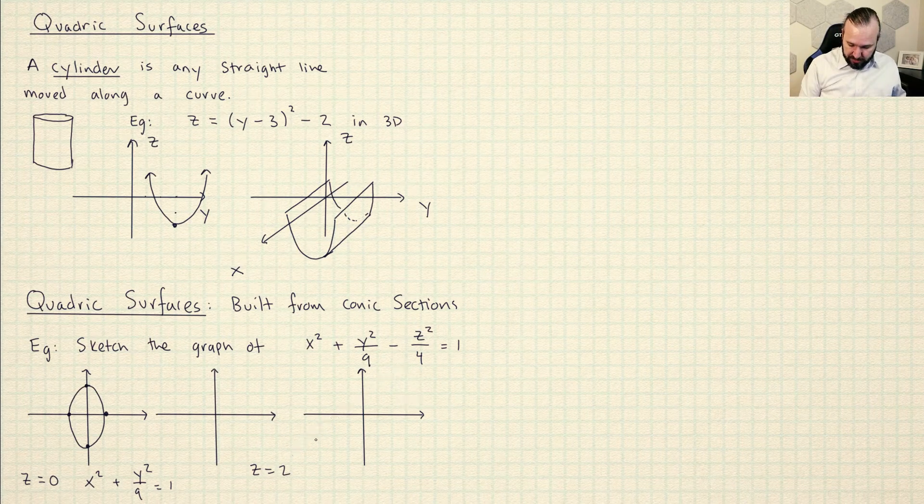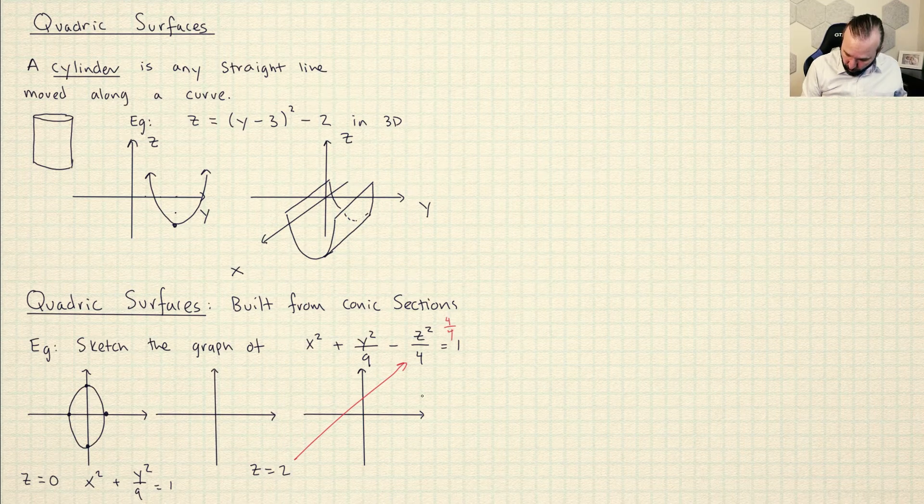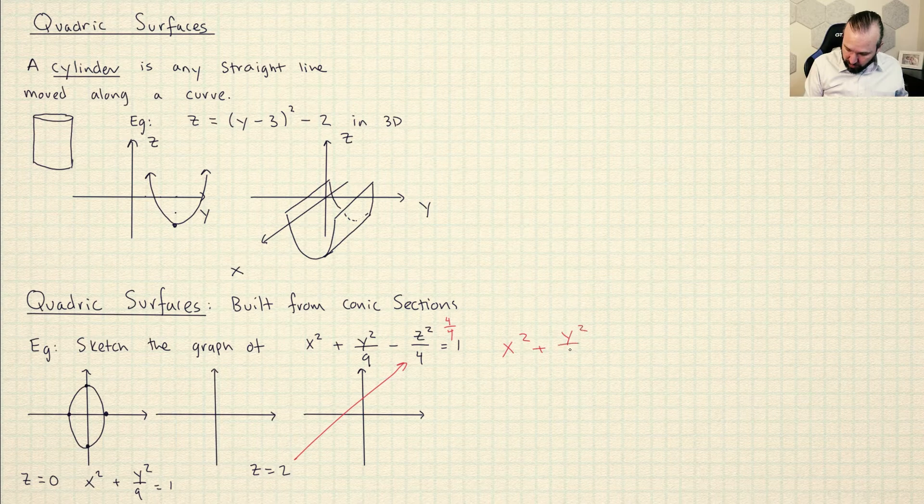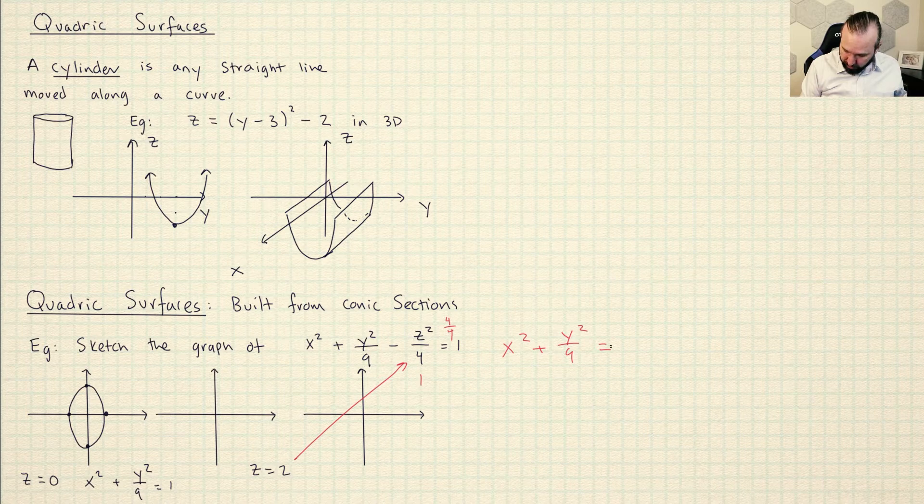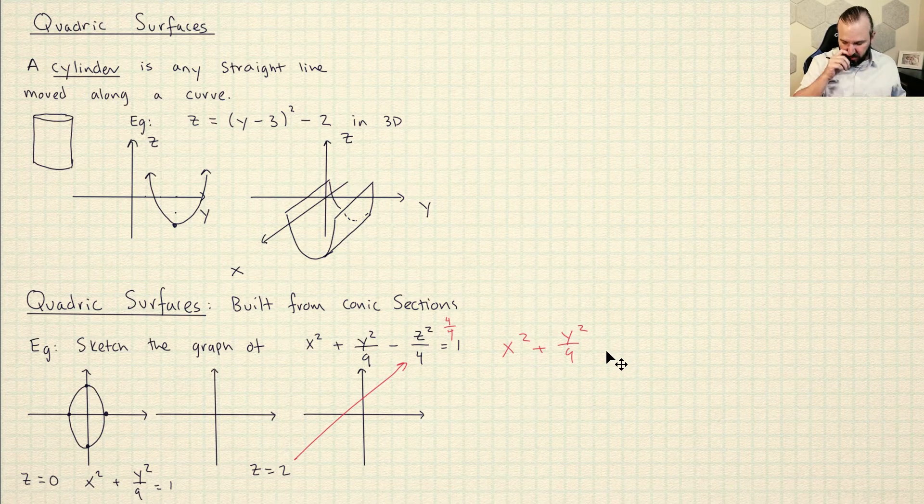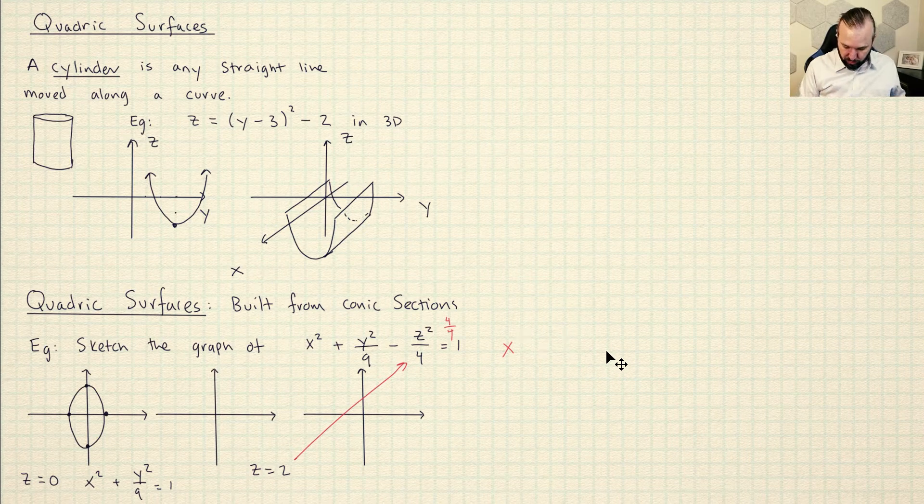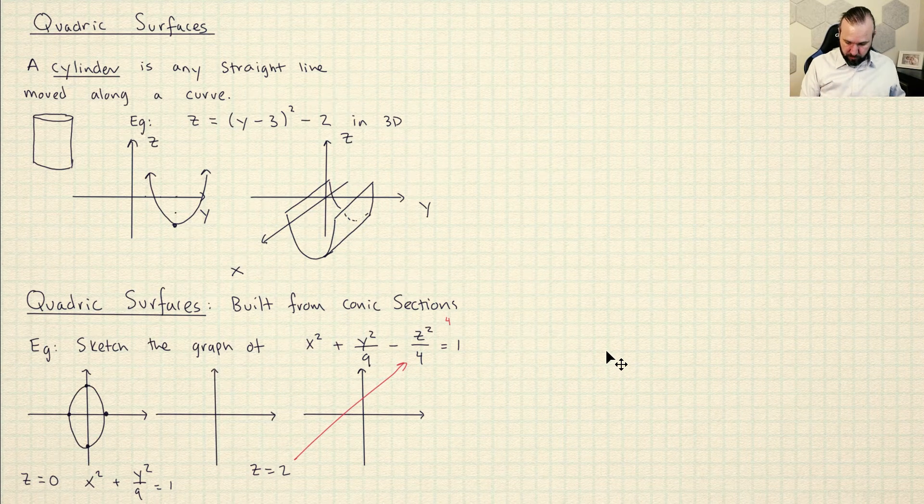So if I plug Z is equal to 2 into this equation, then I'm going to get here 4 over 4. So this is basically just X squared plus Y squared over 9 is equal to C. And then this will be 1 right there. And I've got a 1 on this side. So this is going to be X squared plus Y squared over 9 is equal to 2. So let me put that down.